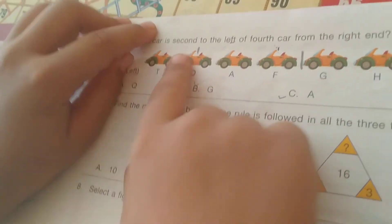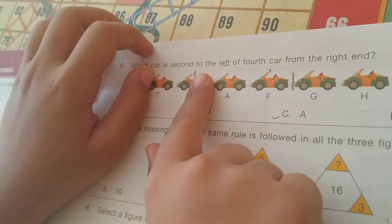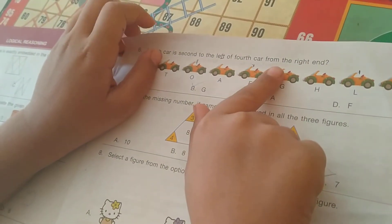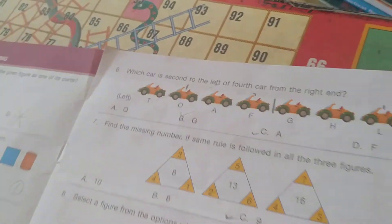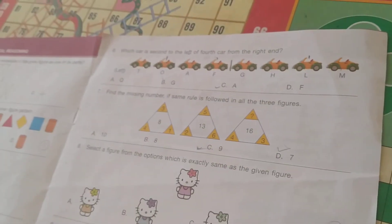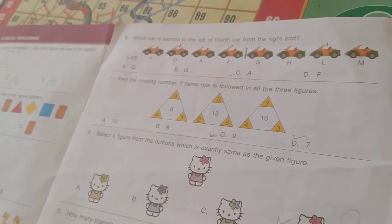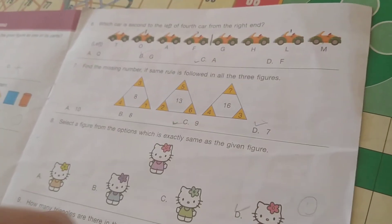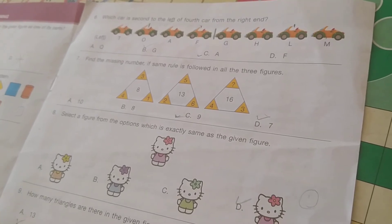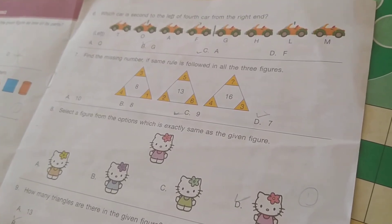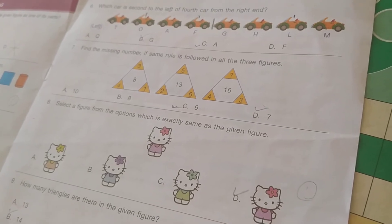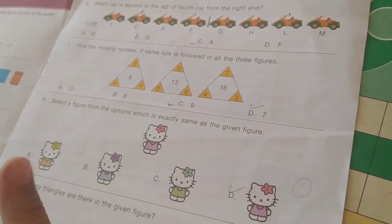Which car is second to the left of fourth car from the right end? So the answer is C. Find the missing number if same rule is followed in all the three figures. So the answer is C, 9.